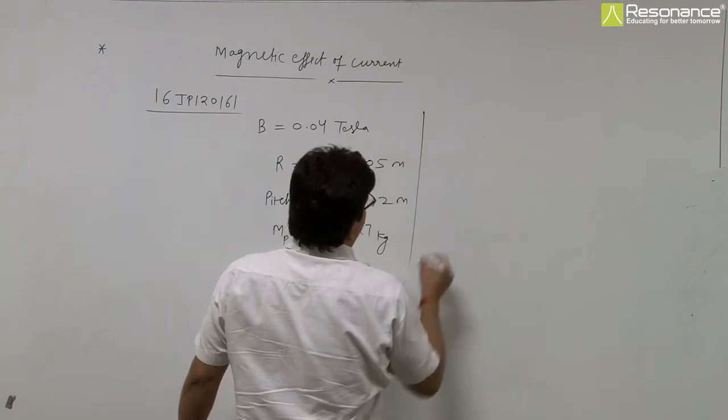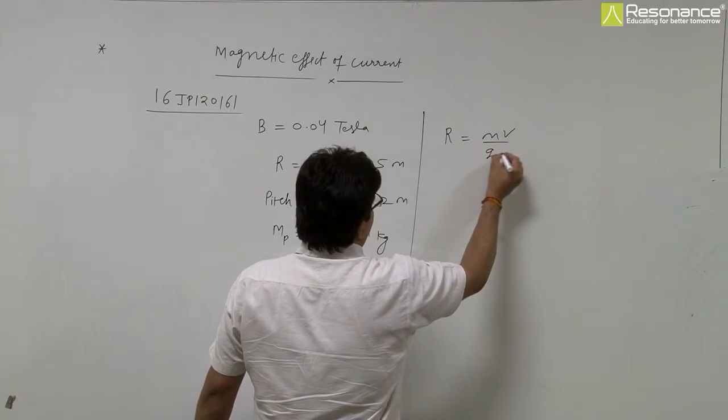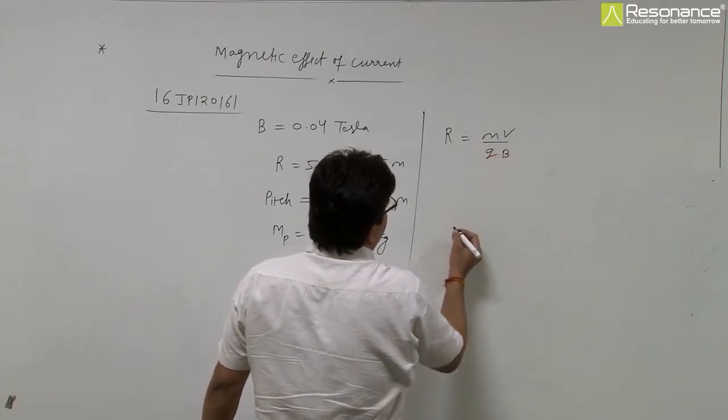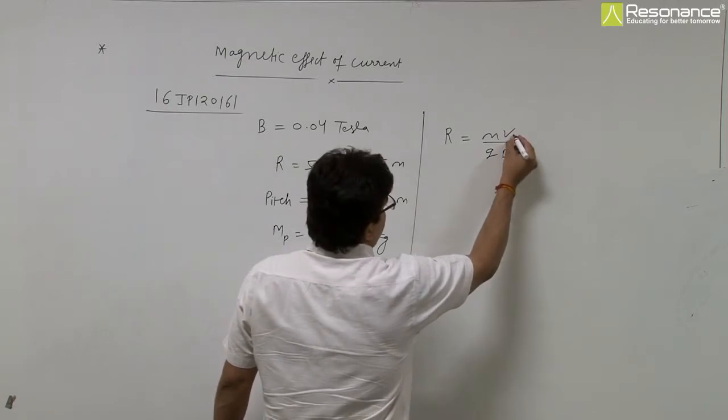So due to perpendicular component, particle will move in a circle and it is a radius given by r equal to mv by qB. Radius is r equal to mv upon qB. This is perpendicular velocity.